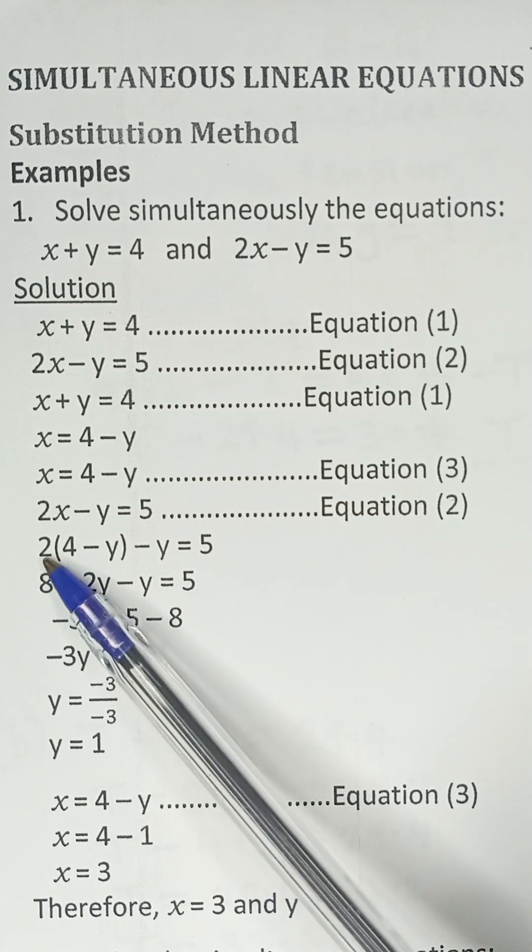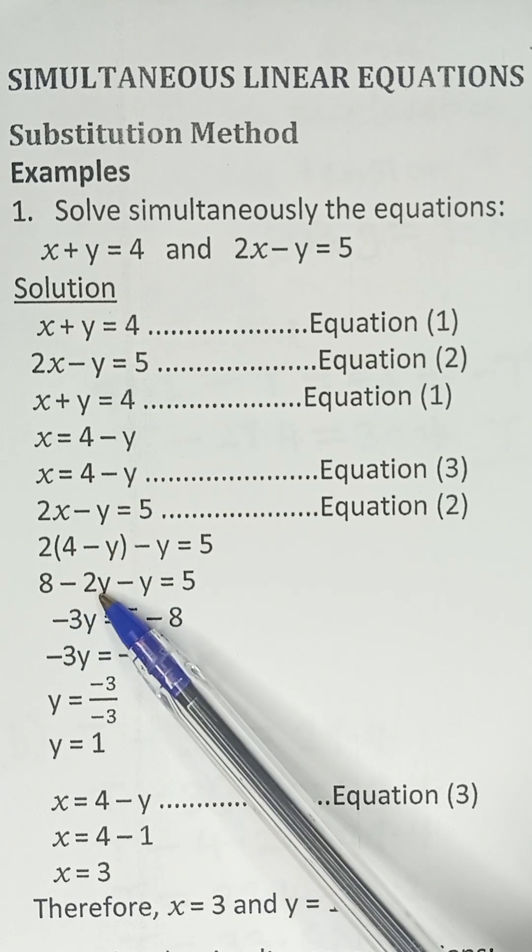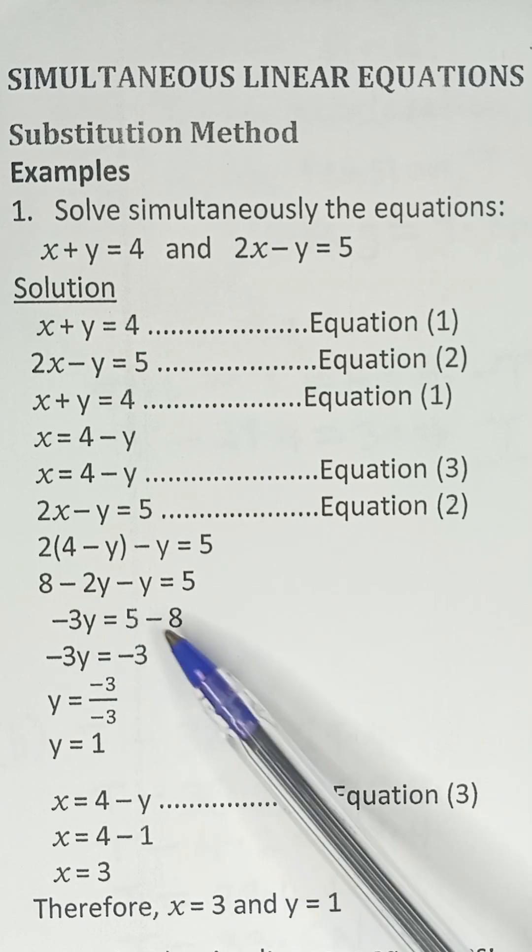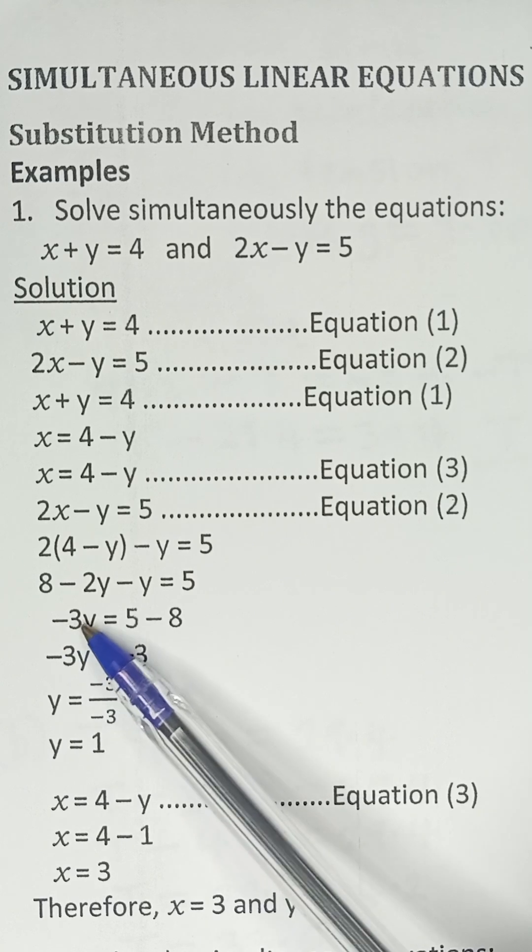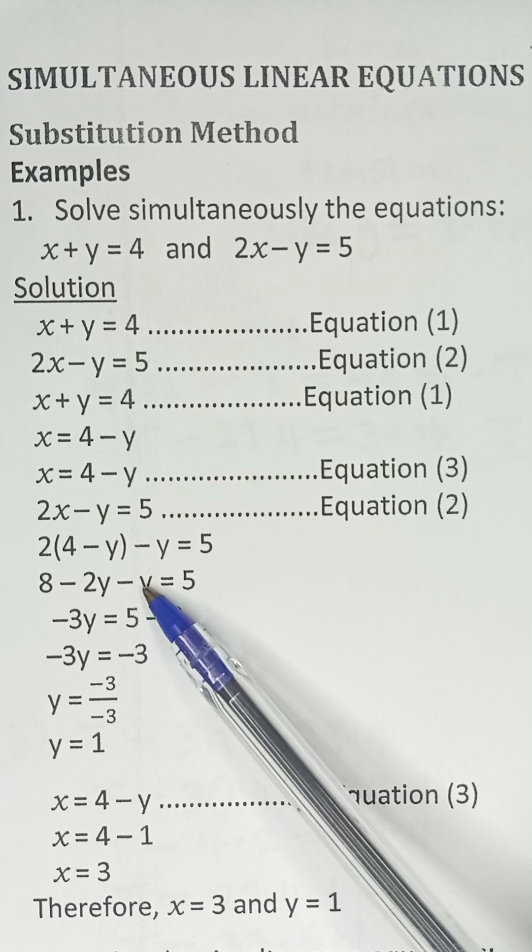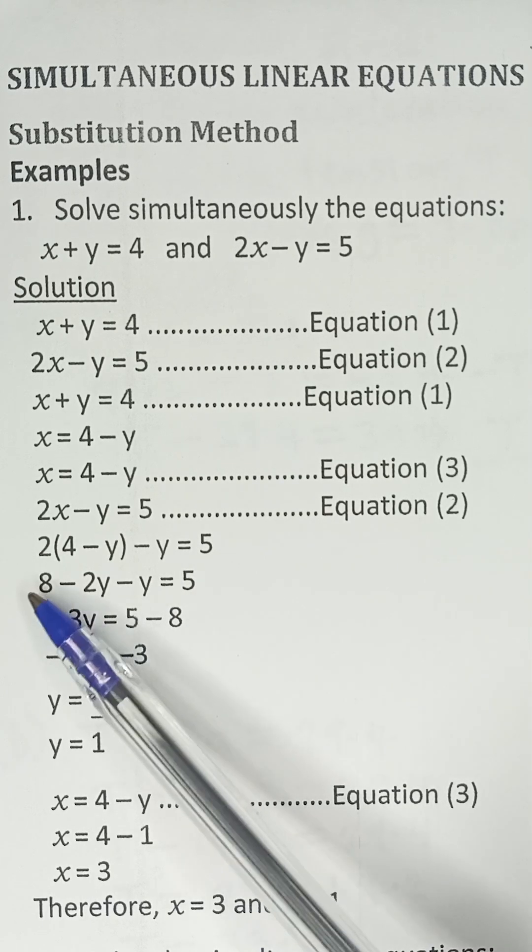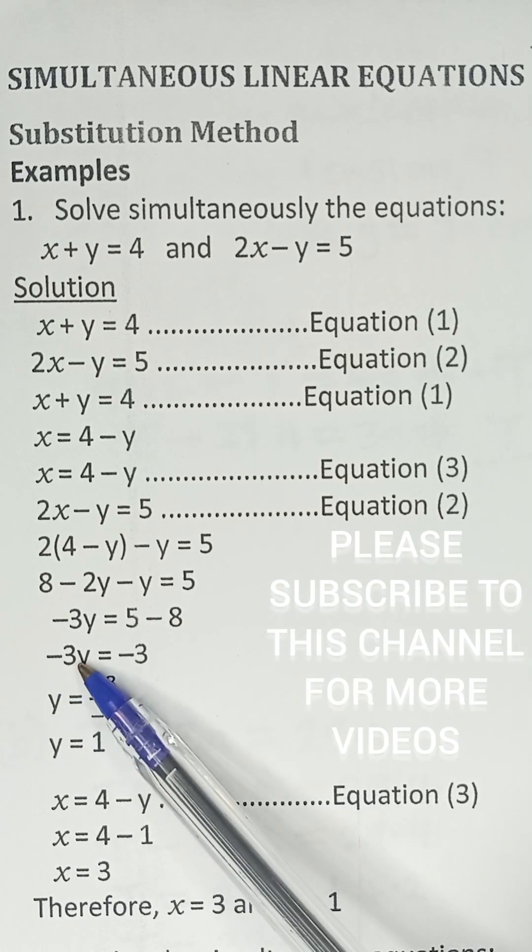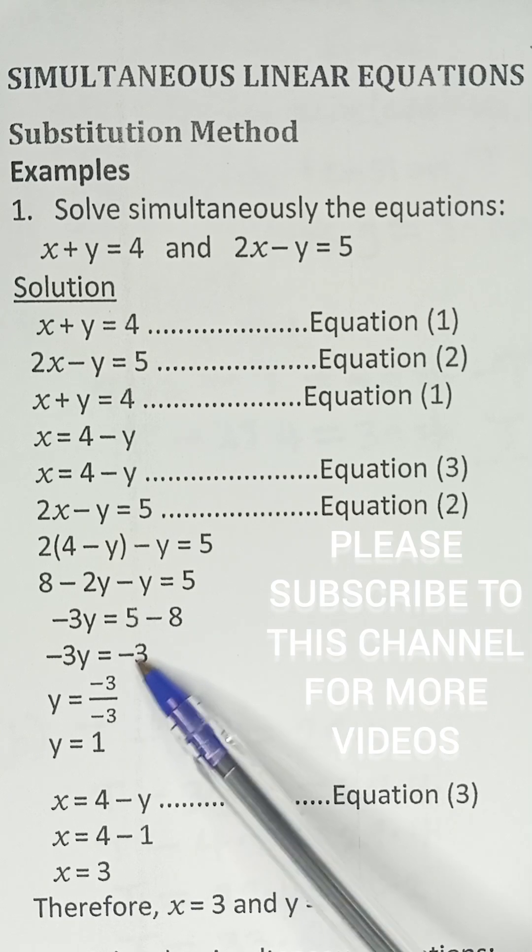We expand the bracket. 2 multiplied by 4 is 8, and 2 multiplied by negative y is negative 2y. So we have 8 minus 2y minus y equals 5. Negative 2y minus y gives us negative 3y. When the positive 8 goes to the other side, it becomes negative 8. So we have negative 3y equals negative 3, because 5 minus 8 is negative 3.